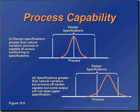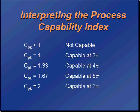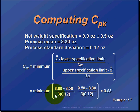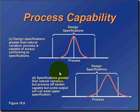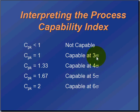So as I've just said, a process that yields a CPK of less than one is not capable. If CPK equals one, it's capable at three sigma — since we're using three sigma as the denominator, and three sigma indicates the distance from the design specification center out to the tail of the distribution.